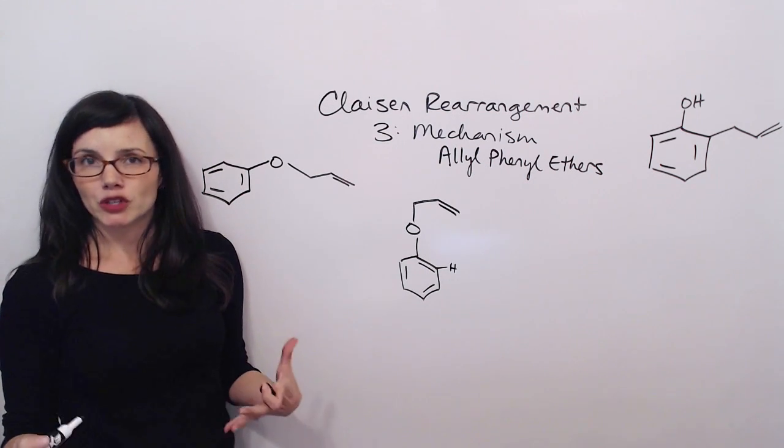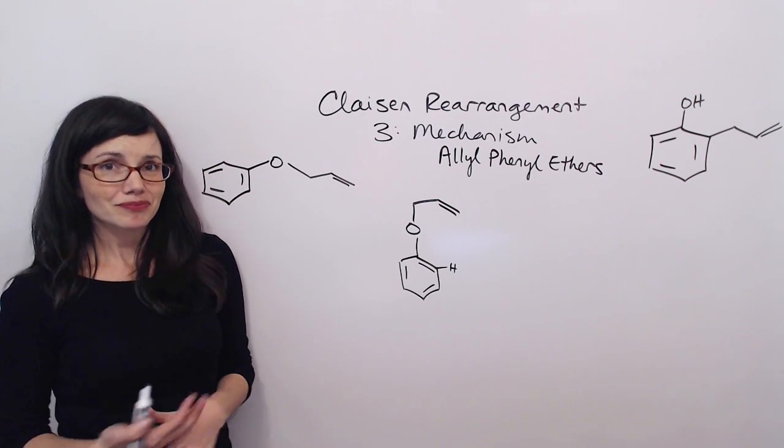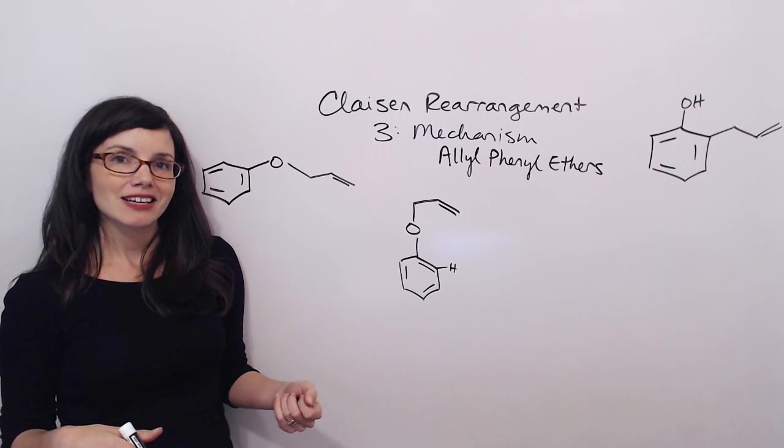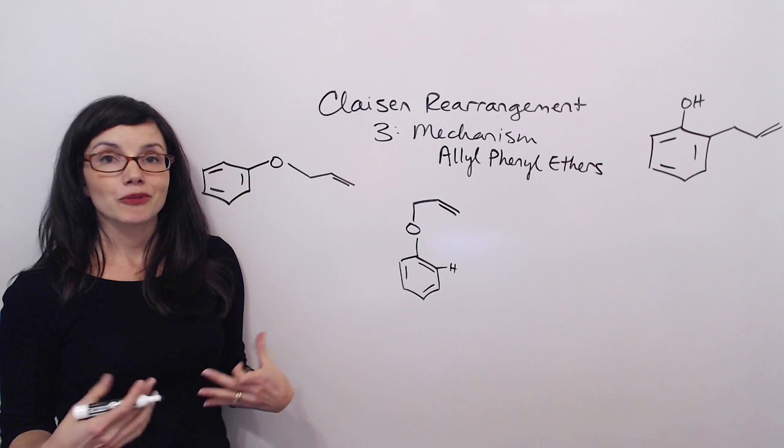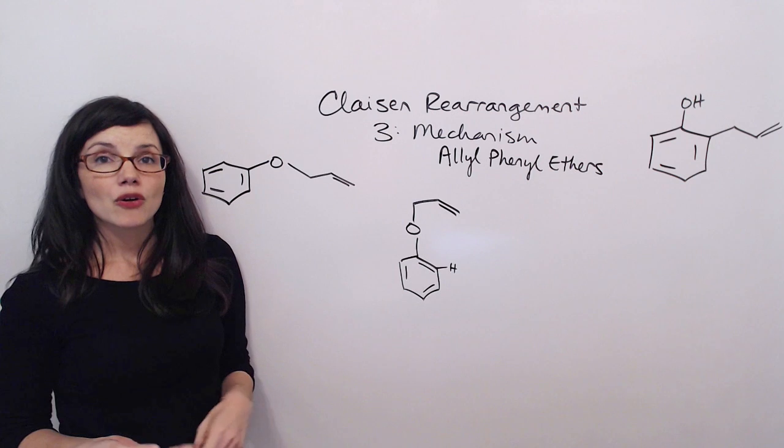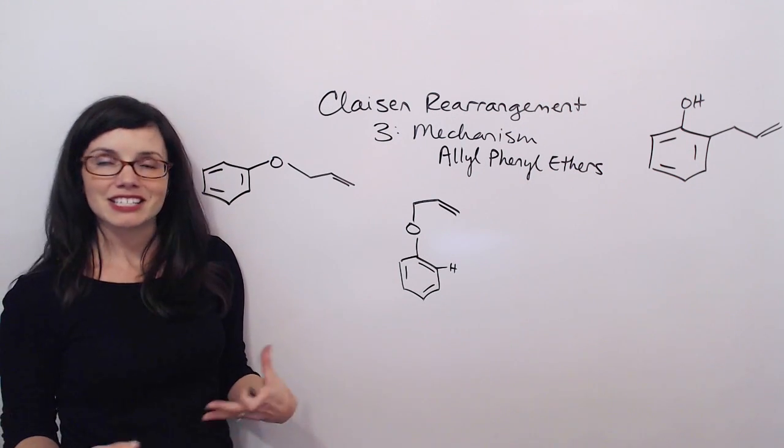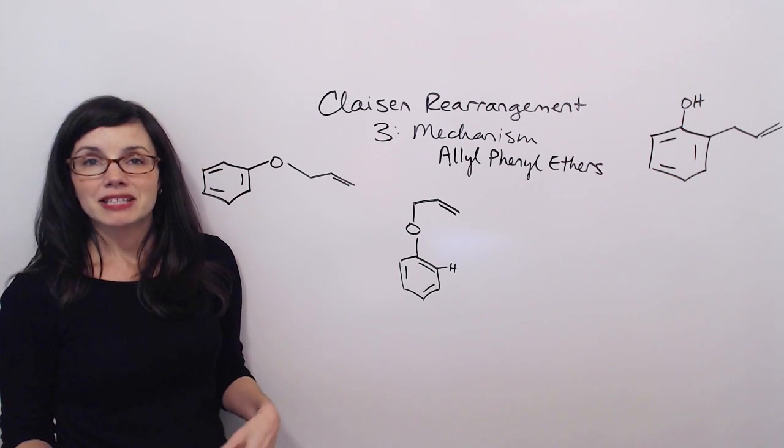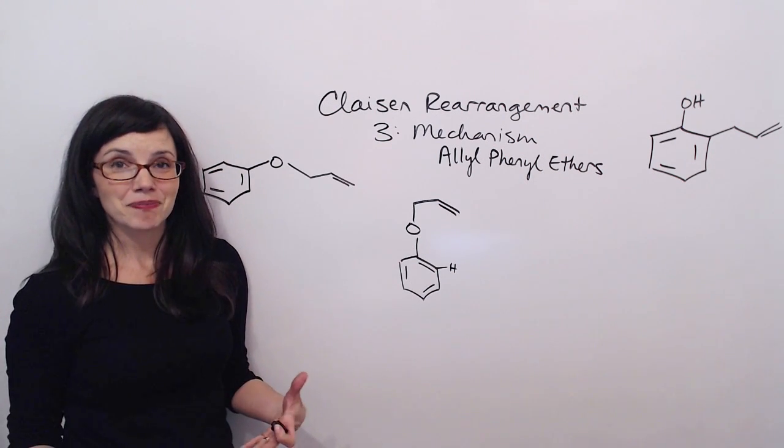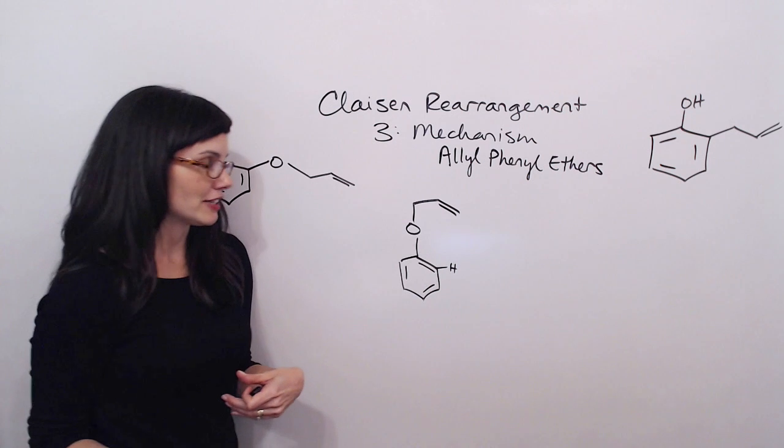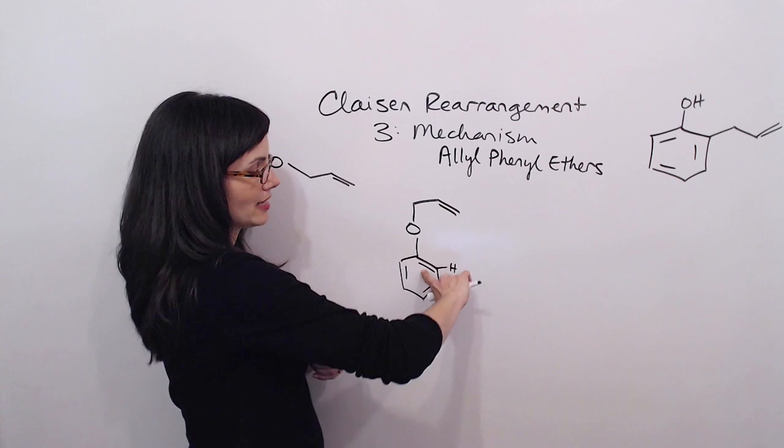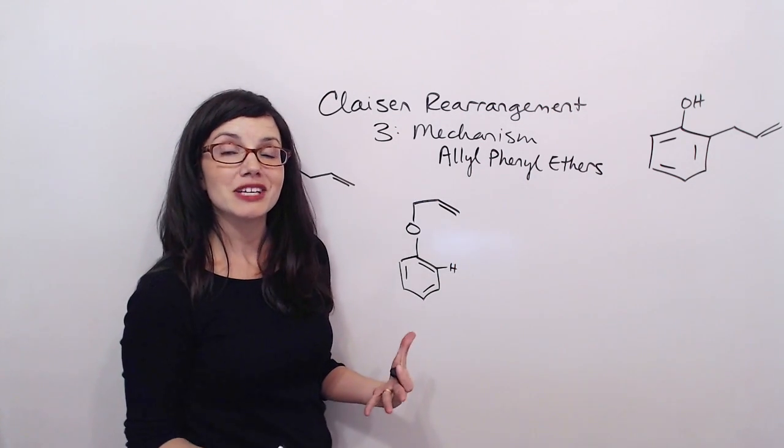Now, as far as the first step of the mechanism, I like to think about some reactions that we've done in the past. One of them is the reactions of benzene that we did with electrophilic aromatic substitution. We know that benzene is a great nucleophile. Benzene likes to send its carbon-carbon double bond pi-electrons out to attack stuff. And that's exactly what's going to happen here. The first step of this reaction is that one of these double bonds is going to send its pi-electrons out to do the attack.